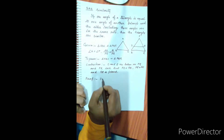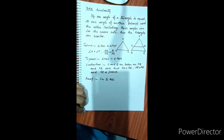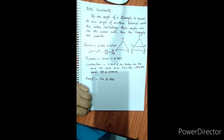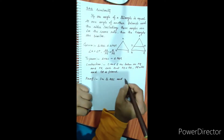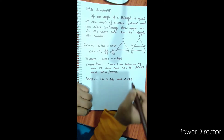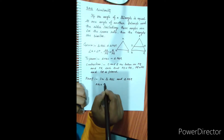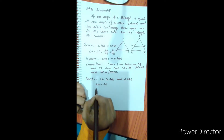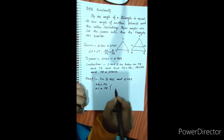In triangle ABC and triangle PDE: AB equal to PD and AC equal to PE, by construction.